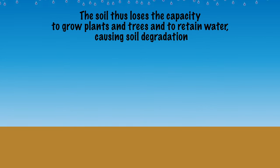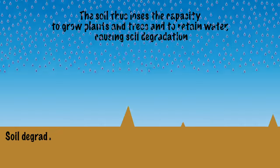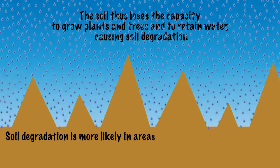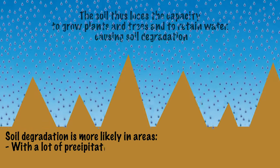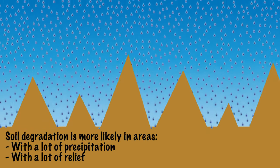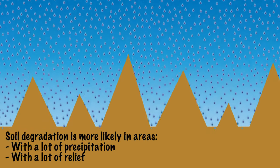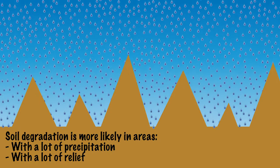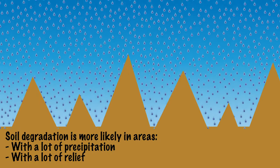In areas with a lot of precipitation and a lot of relief, the soil can wash away much more easily. More water is available and because the bottom is steep, it will wash away more easily.